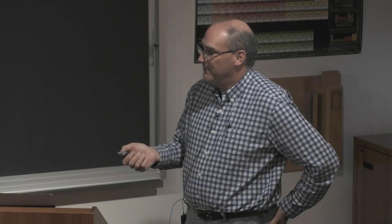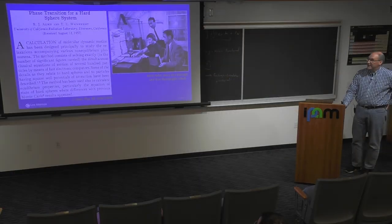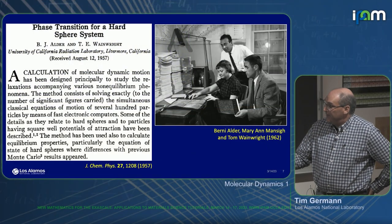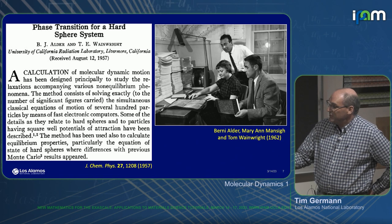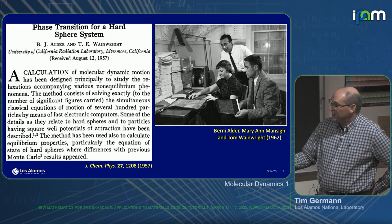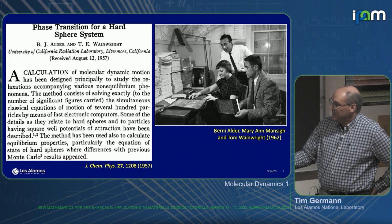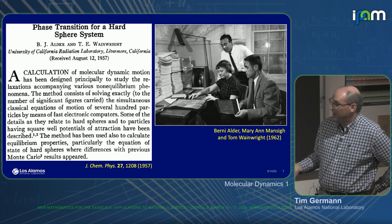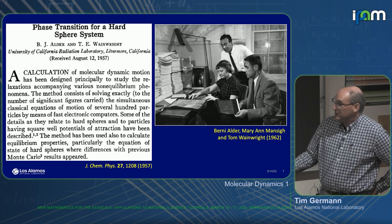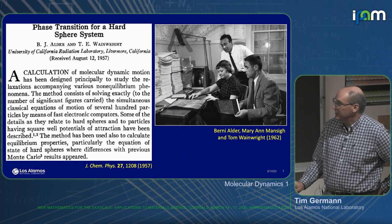From Monte Carlo to MD: the first paper was computing equation of state. The realization was that you don't need to move atoms around randomly — you can actually have them follow trajectories and sample the phase space a different way. That's essentially what molecular dynamics is. This landmark paper talks about accuracy issues, the precision of the calculation, several hundred particles. The potentials were hard sphere interactions like the Monte Carlo ones, and the analysis was to compute equilibrium properties and the equation of state.